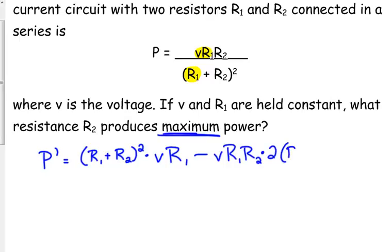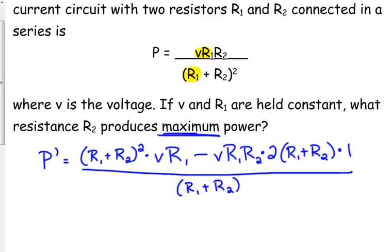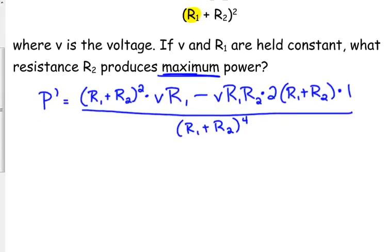So that's a chain rule. The exponent, you keep the inside the same times the derivative of the inside. R sub 1 is a constant, so its derivative is 0. R sub 2 is our variable, so its derivative is 1. All over the bottom squared. So that would make that to the fourth.